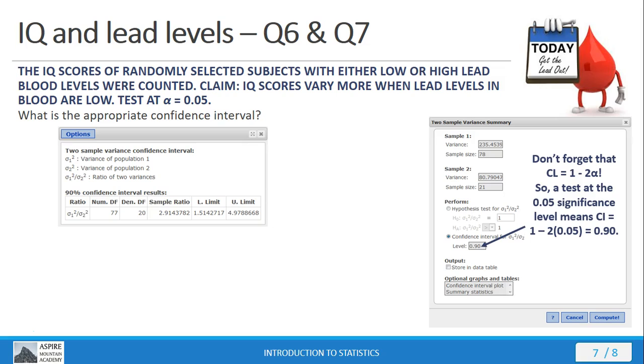We press compute, and out comes our results window, and we're going to get our upper and lower bounds, our confidence interval, right there off the table, just like we've always done. And you can see them listed here at the end, just like we've always seen them.